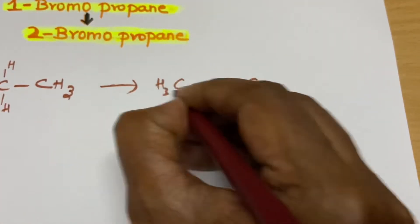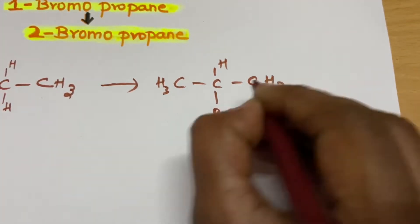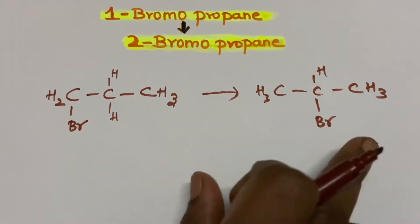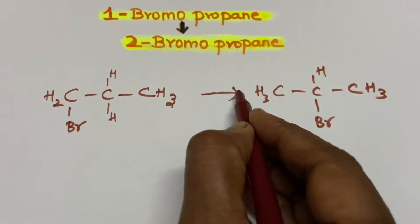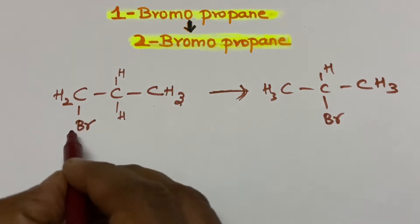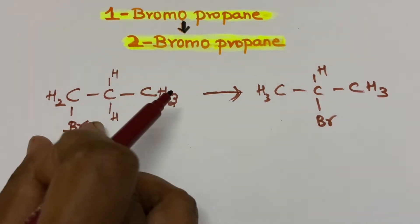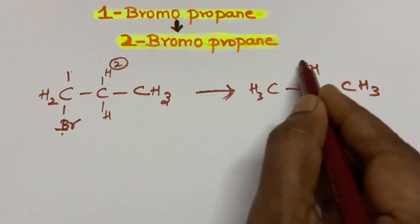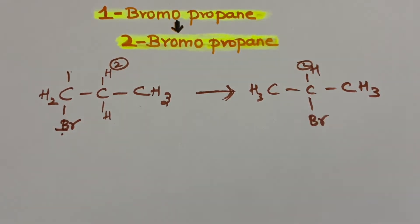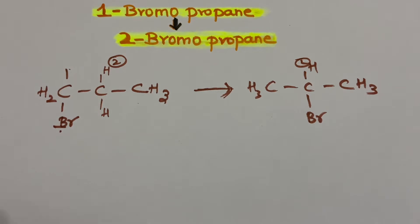In 2-bromopropane, in the two position there will be a bromine. If you analyze between these two molecules, the bromine is in position one and needs to shift to position two. So how do we shift the bromine from position one to position two? We have to remove the bromine, but we cannot remove bromine alone — that is not possible.